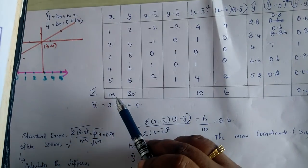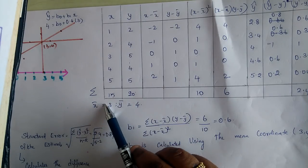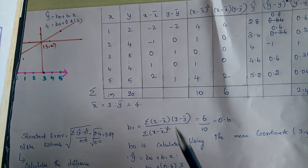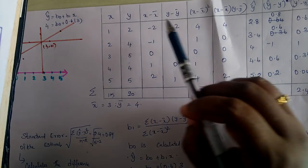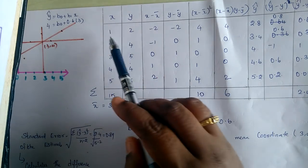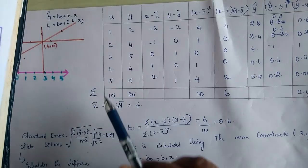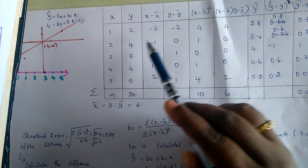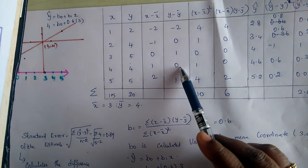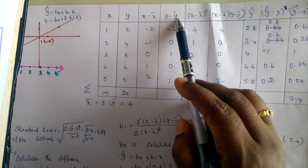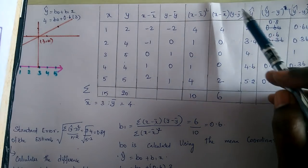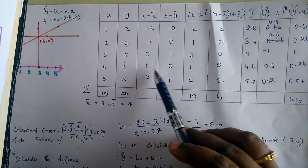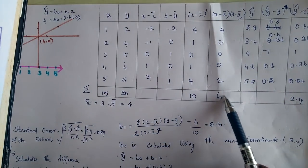Y-bar is 4 because all y values add up to 20, and 20 divided by 5 is 4. Now we find the product of (x minus x-bar) and (y minus y-bar). For x minus x-bar: 1−3=−2, 2−3=−1, 3−3=0, 4−3=1, 5−3=2. For y minus y-bar: 2−4=−2, 4−4=0, 5−4=1, 4−4=0, 5−4=1. The products are: (−2)(−2)=4, (−1)(0)=0, (0)(1)=0, (1)(0)=0, (2)(1)=2, giving a sum of 6.